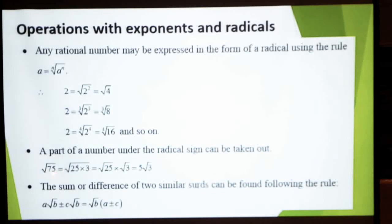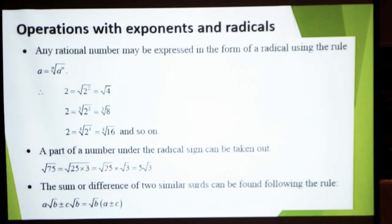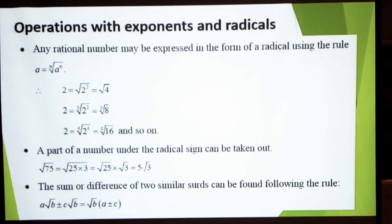اچھا اب اگر آپ کے پاس surd میں multiple form میں numbers ہیں تو آپ اس کو simplified form میں کر سکتے ہو — کہ اس میں سے جو part common ہے وہ باہر نکال سکتے ہیں۔ جیسے √75 ہے تو 75 = 25 × 3، تو √75 = √25 × √3 = 5√3 — کیونکہ √25 = 5، تو 5 باہر آئے گا اور √3 کے ساتھ آئے گا۔ اس طرح آپ radical sign کو simplify کر سکتے ہو۔